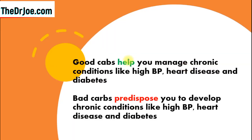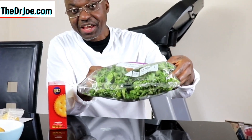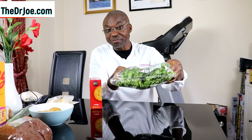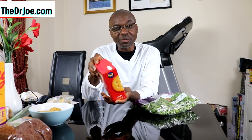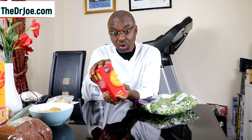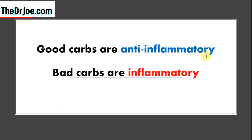Good carbs help you manage chronic conditions like high blood pressure, heart disease, and diabetes. Bad carbs, on the other hand, predispose you to develop those same chronic conditions. This is kale — a good carb — it will help you manage high blood pressure and diabetes. On the other hand, these cookies are bad carbs and are going to predispose you to developing high blood pressure, diabetes, and other chronic conditions. Good carbs are also anti-inflammatory, while bad carbs are inflammatory.